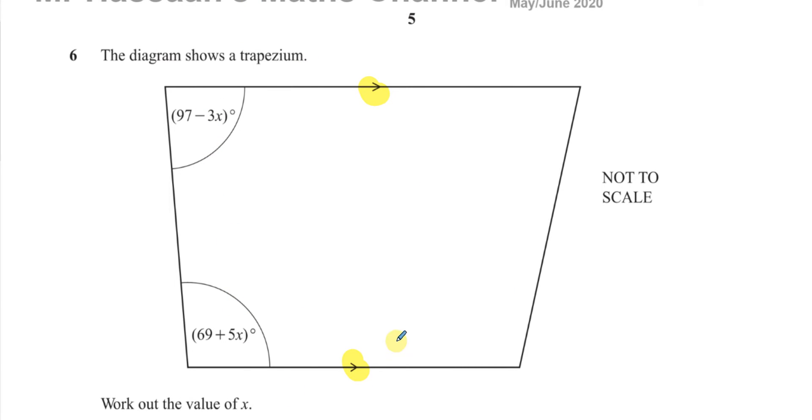And these two angles we can see, whenever we're dealing with angles, we've got to think about all the different rules that we know. We want to find the value of X here. These two angles are related to each other by the fact that these lines are parallel. We have corresponding angles which make F shapes with each other. You have alternate angles which make like a Z shape with each other. And then you have these interior angles which make like C shapes with each other.